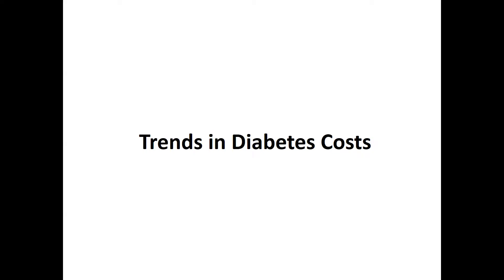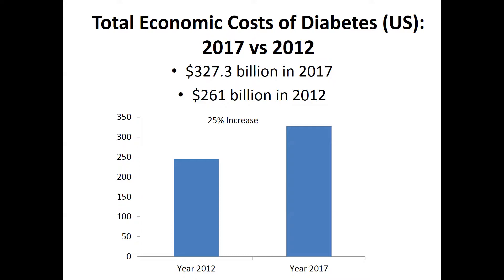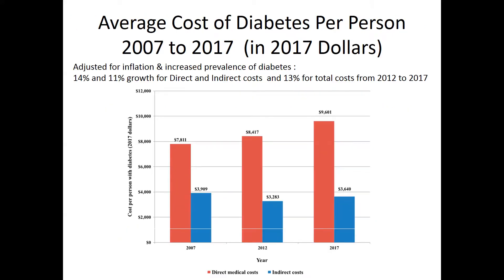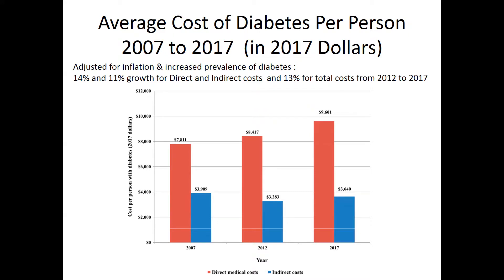What are the trends in diabetes costs? Between 2012 and 2017 there was an increase from $261 billion to $327 billion — a 25% increase over five years, about 5% per year. Adjusting for inflation, total direct costs went up 23% and indirect costs went up 26%. There's a steady increase from 2007 to 2012 to 2017. When also adjusting for increased prevalence, costs are going up at a slower rate: 14% for direct costs and 11% for indirect costs — an average overall inflation and prevalence-adjusted increase of about 13%.